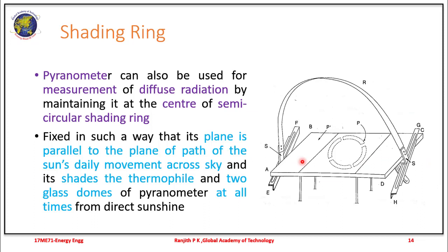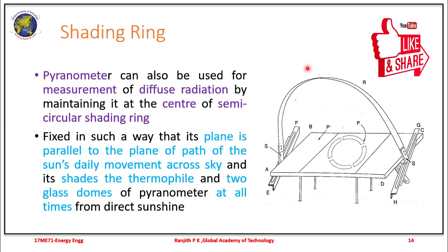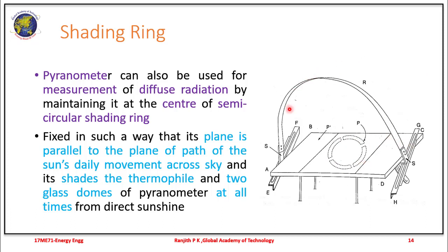A shading ring, as mentioned earlier, is a variation in the pyranometer used to measure diffuse radiation. A shading ring R is attached to the complete pyranometer setup. This shading ring is attached in such a way that its plane is parallel to the path of the sun's daily movement. It ensures that it shades the thermopile and domes of the pyranometer at all given times from the sunshine, so there is only diffuse radiation measured from the pyranometer.